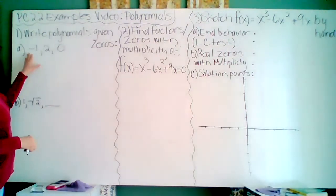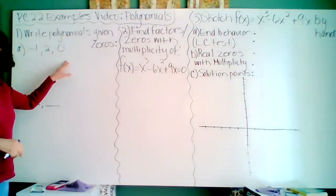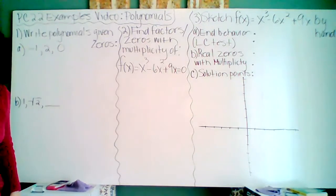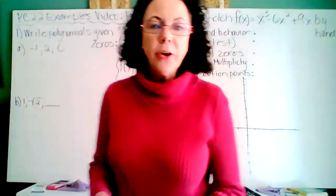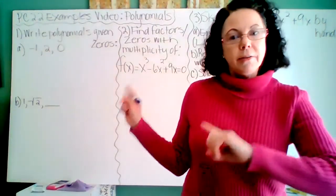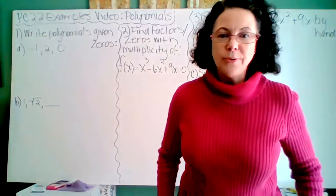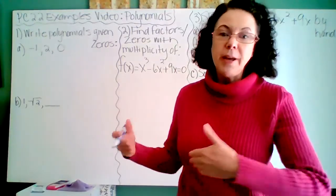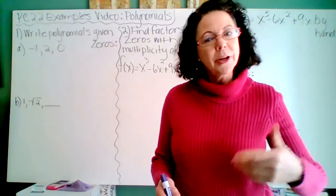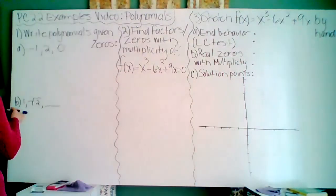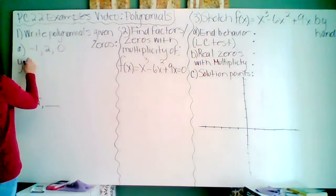So number one, write polynomials given zeros. So let's take a look. On A, our zeros are negative 1, 2, and 0. So we're going to go ahead and write the factors with our x's that go with these zeros.